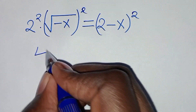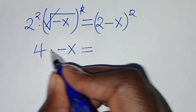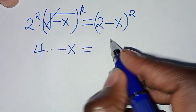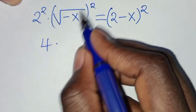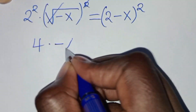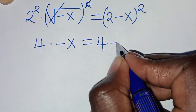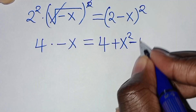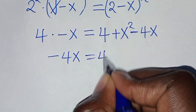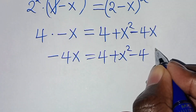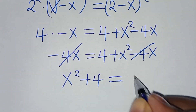So here we have 2 squared, which is equal to 4, times square root of minus x squared — we eliminate the square root sign — so times minus x. This is equal to 2 minus x squared, which expands as 2 squared plus x squared minus 4x, that is 4 plus x squared minus 4x. So therefore here we have minus 4x, which is equal to 4 plus x squared minus 4x.